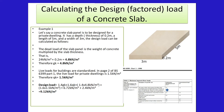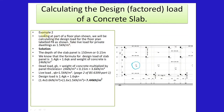Let's look at another example — Example 2. We are going to make use of this plan. Looking at the floor plan shown here, we will be calculating the design load for the floor plan labeled P8 as shown. Take live load for private dwellings at 1.5 kilonewtons per meter squared. On this plan, the thickness given is 150 millimeters. The depth of the slab panel is 150 millimeters or 0.15 meters.